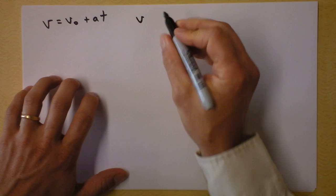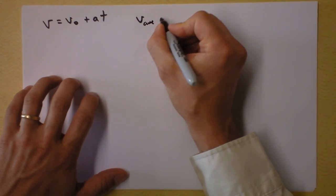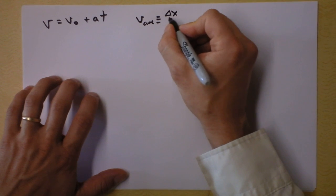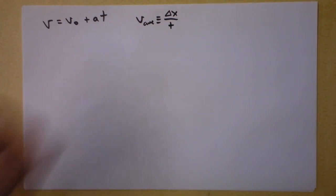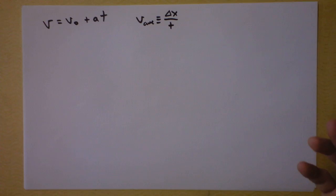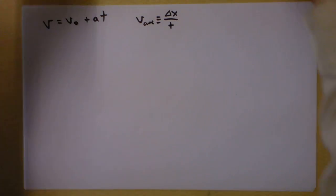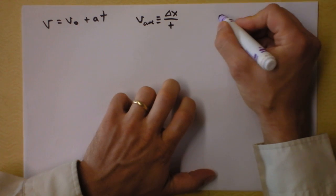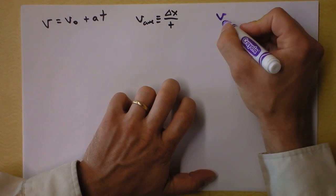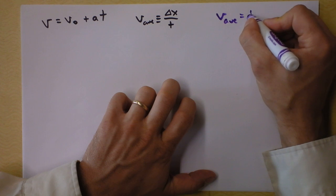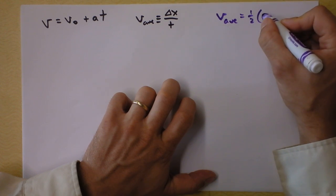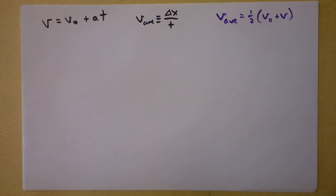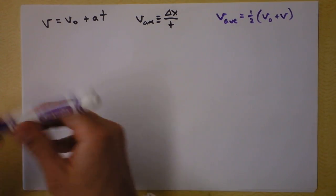I also know that average velocity is defined to be how far you've displaced divided by how long it took. Those things are always true. There's this other equation over here — we should probably switch to maybe a gentler purple — that is not always true. I'll put the condition for its truth next to it. Average velocity is one-half the initial velocity plus the final velocity. And that's only true if something's the case.